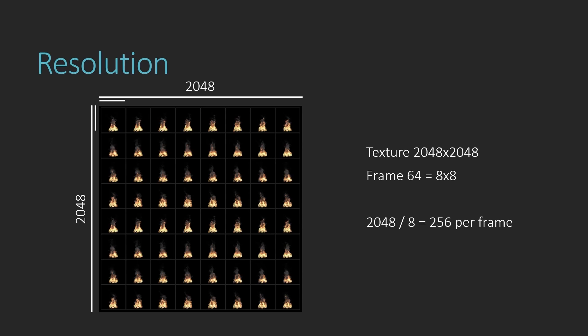For example, with a 2K by 2K texture and 64 frames, we divide the texture into an 8-by-8 grid. The final resolution per frame is 2000 divided by 8, which returns 256 pixels per frame. This is the quality of your flame in the game engine, which is not super high. Depending on the scaling you want, you need to consider how much resolution you can spend.